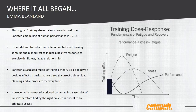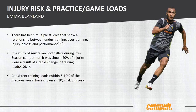The model of training stress balance and understanding the relationship between fatigue and fitness really started back in the 1970s with Bannister. He suggested having this optimal zone between fatigue and fitness, correct training load and optimal recovery time to make sure the athlete had the right balance to perform. From this model, a lot more studies started coming out around specifically under-training, over-training, and this link between fitness and fatigue to induce positive performance.